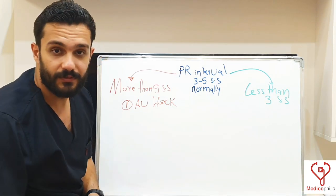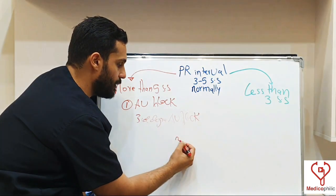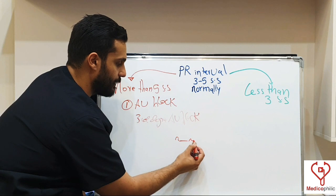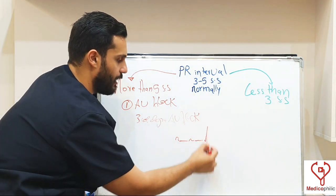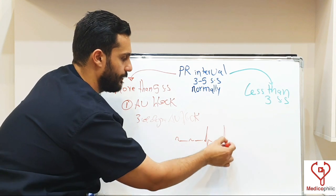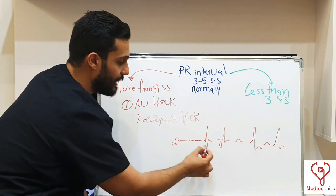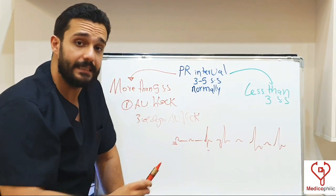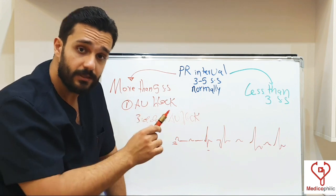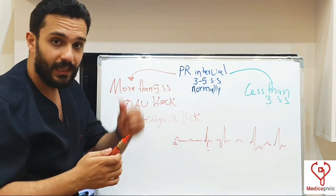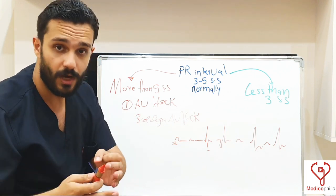Coming to the third degree AV block, or complete heart block. Here, the P waves are not related to the QRS. For example, there is a P wave, then another P wave, then after a specific duration there is a QRS — and the P waves are not related to the QRS. In complete heart block, there is no complete conduction between the atrium and the ventricle, so the atrial contraction (P waves) is not related to the ventricular contraction (QRS).